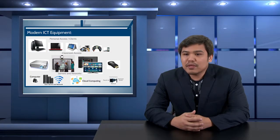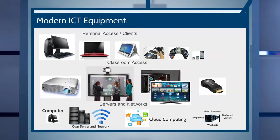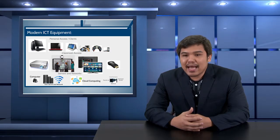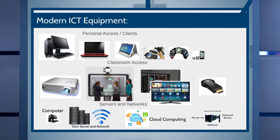The term modern can be relative and quickly changes with time, but for now the following can be safely considered as modern ICT equipment. I categorized them into three. The personal access or client ICT equipment are usually used by learners and teachers to access information personally or in small groups. These devices usually act as clients which receive information from servers. The popular clients are the personal computer, laptops, tablet computers, phablets or phone tablets, smartphones, and sound players for audio lectures and audiobooks.